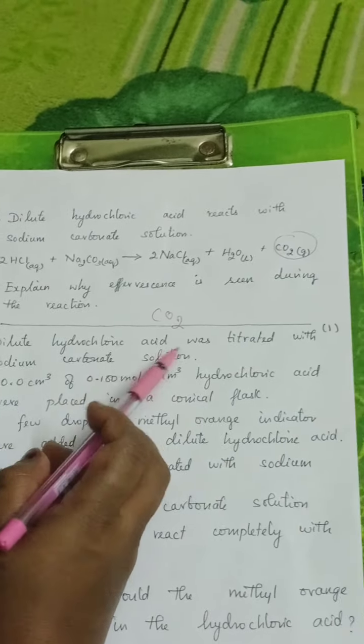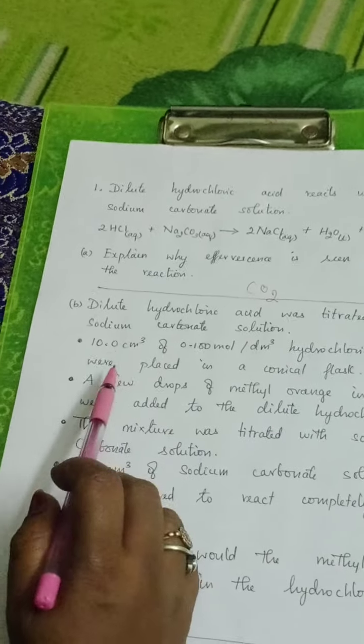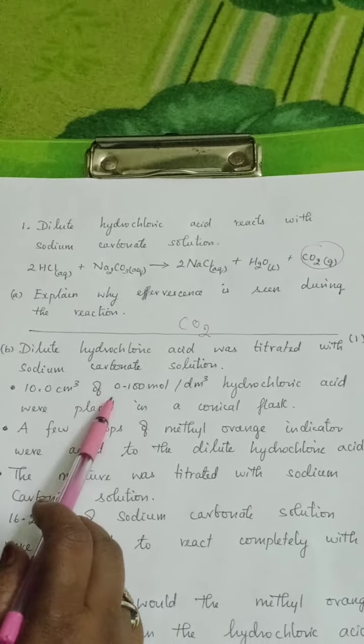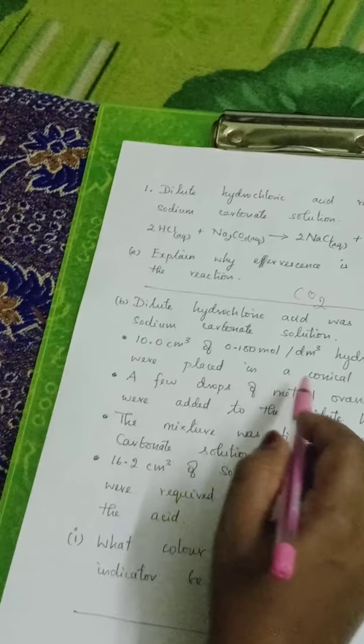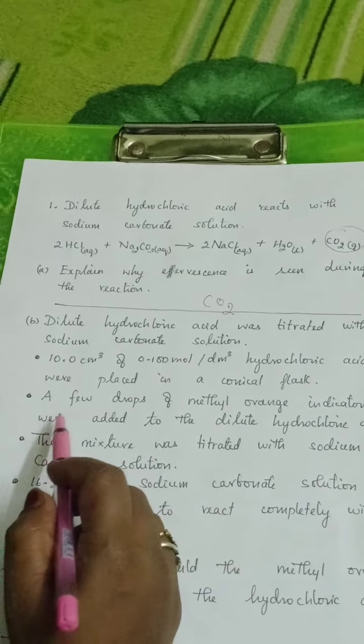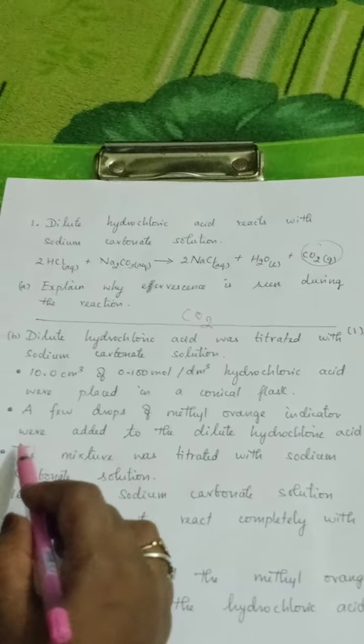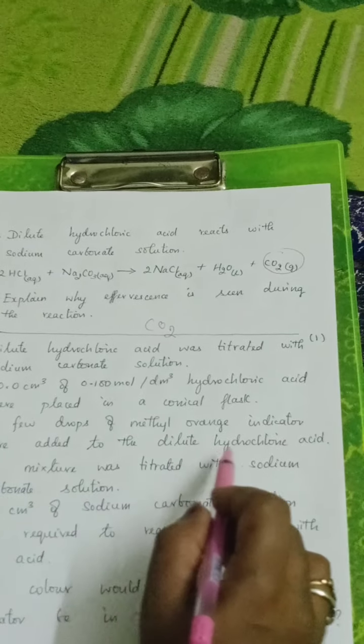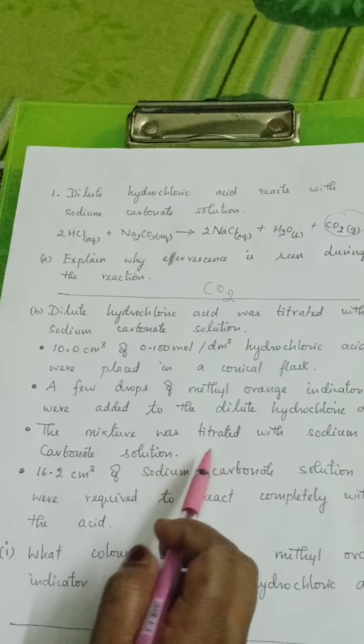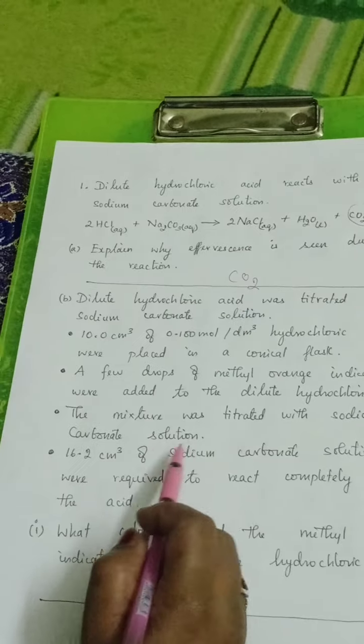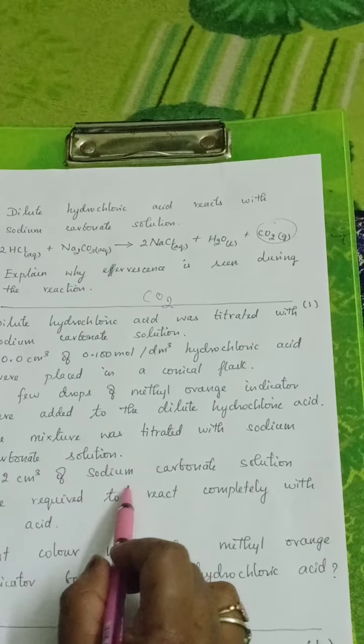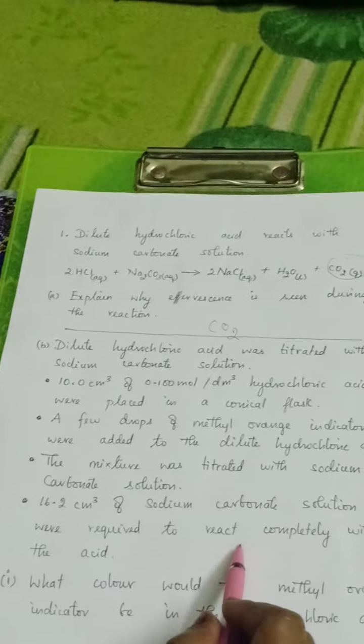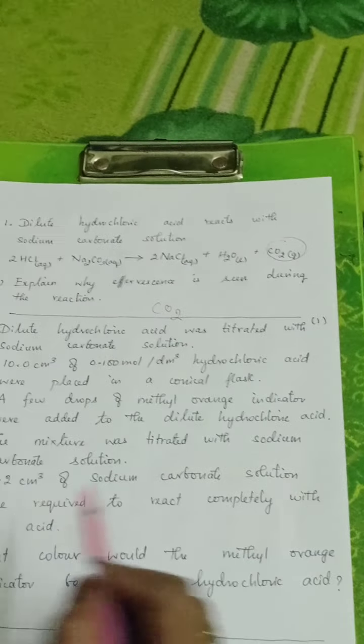Dilute hydrochloric acid was titrated with sodium carbonate solution. 10 centimeter cube of 0.1 mole per decimeter cube hydrochloric acid were placed in a conical flask. A few drops of methyl orange indicator were added to the dilute hydrochloric acid. The mixture was titrated with sodium carbonate solution. 16.2 centimeter cube of sodium carbonate solution were required to react completely with the acid.